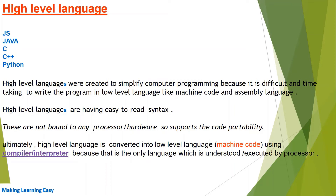After compilation we get the machine code which can directly be run by the processor. For Java, we compile the code and get byte code, and then that byte code is converted into machine code by the Java Virtual Machine. So ultimately all languages are converted into machine code.